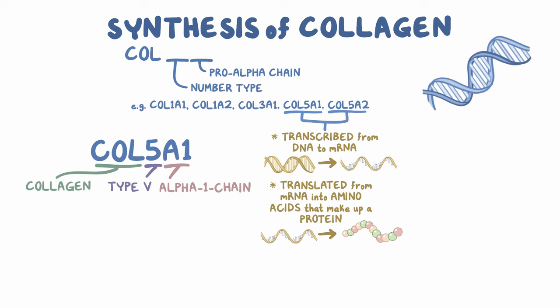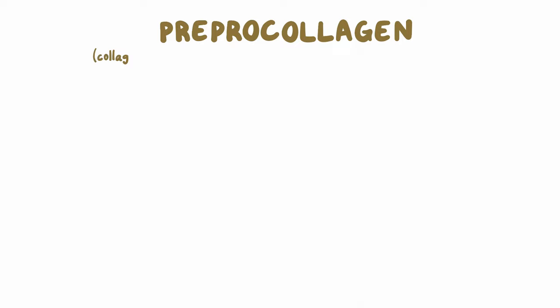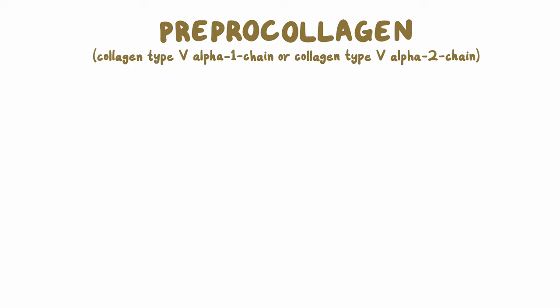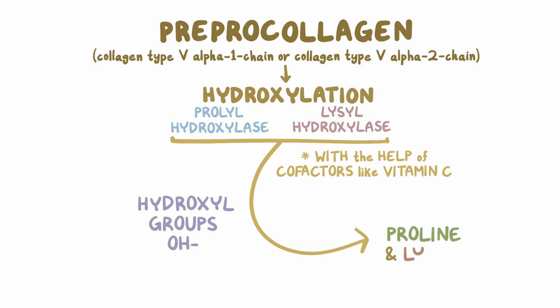This process happens many times over. This string of amino acids consists mostly of glycine and two other random amino acids, usually proline and lysine, that repeat over and over as amino acid triplets. Ultimately, this peptide forms what's called pre-procollagen, which can be a collagen type 5 alpha 1 chain or a collagen type 5 alpha 2 chain, depending on the gene that encodes the protein. Next, pre-procollagen undergoes hydroxylation, where two enzymes called prolyl hydroxylase and lysyl hydroxylase, with the help of cofactors like vitamin C, add hydroxyl groups onto proline and lysine.